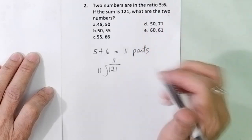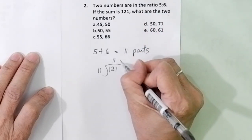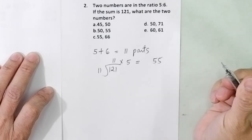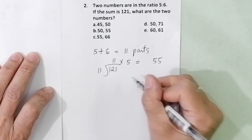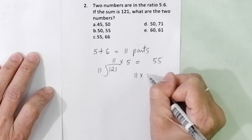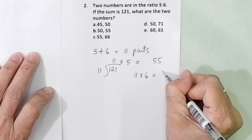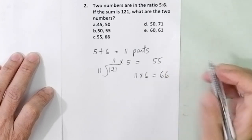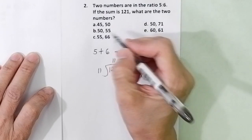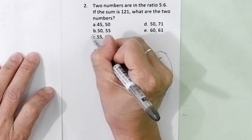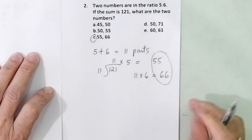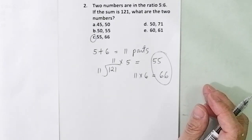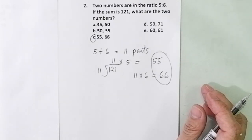What are the two numbers? Multiply 11 by 5, that gives you 55 — that's the first number. And then multiply 11 by 6, that gives you 66 — that is the second number. So the two numbers are 55 and 66. The correct answer is letter C for number two.